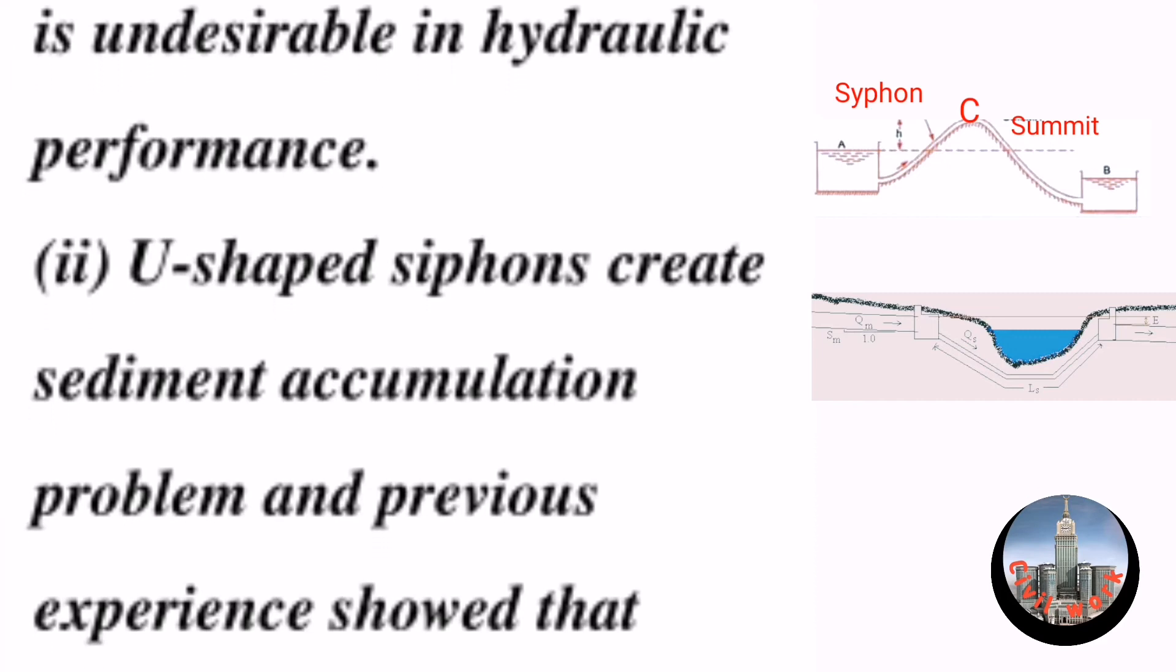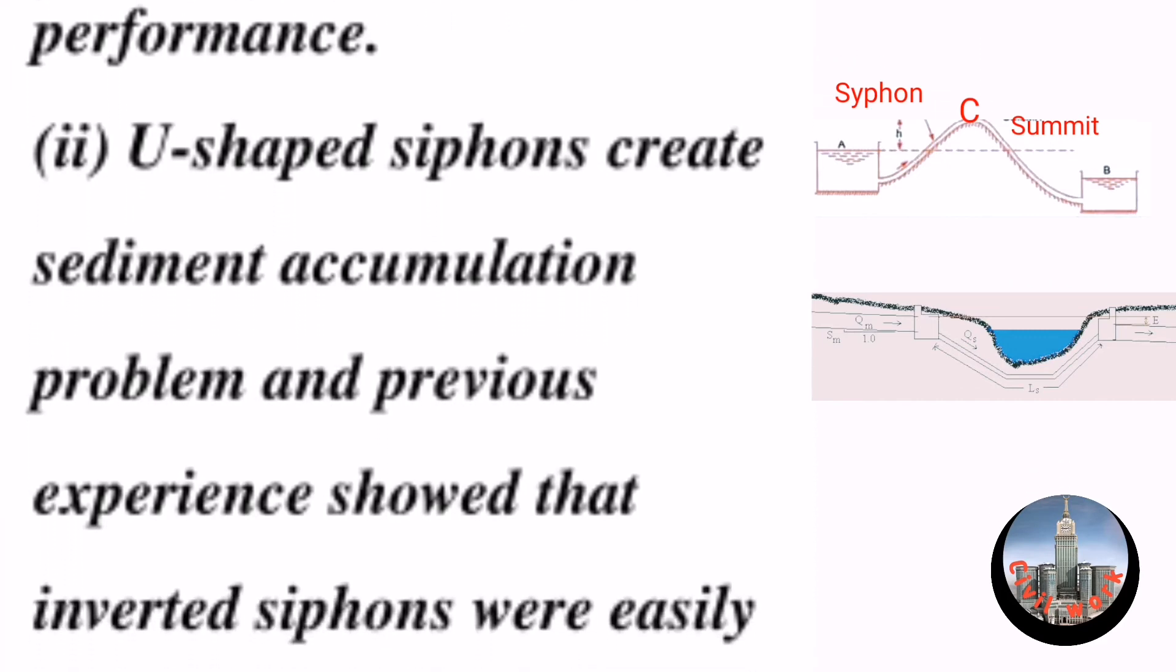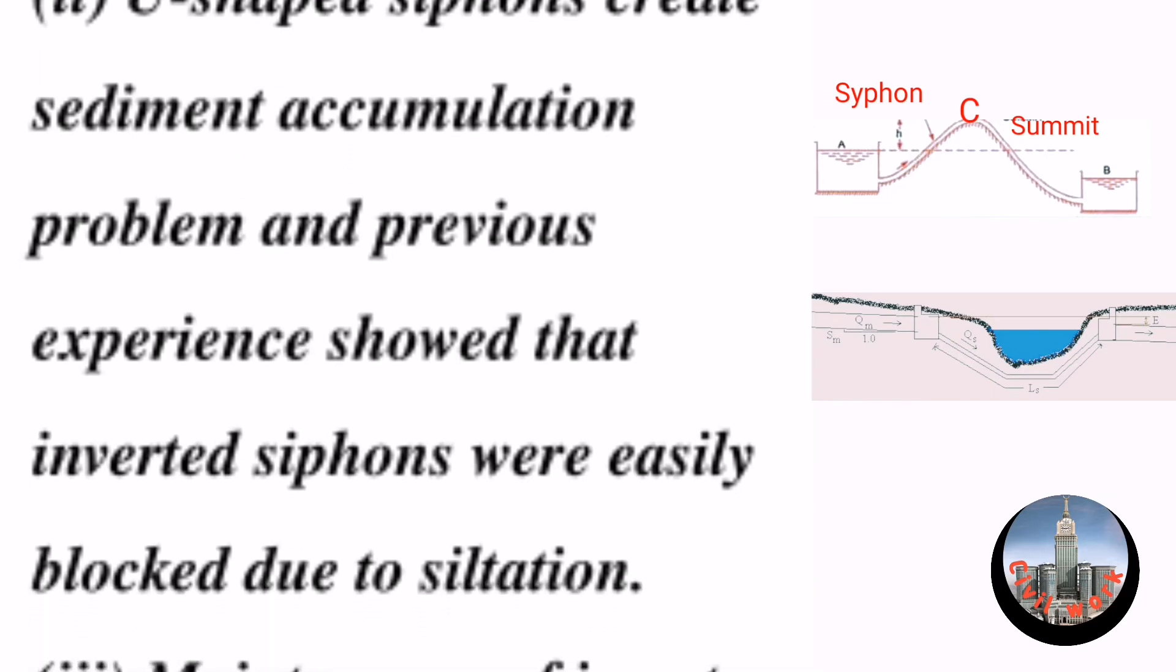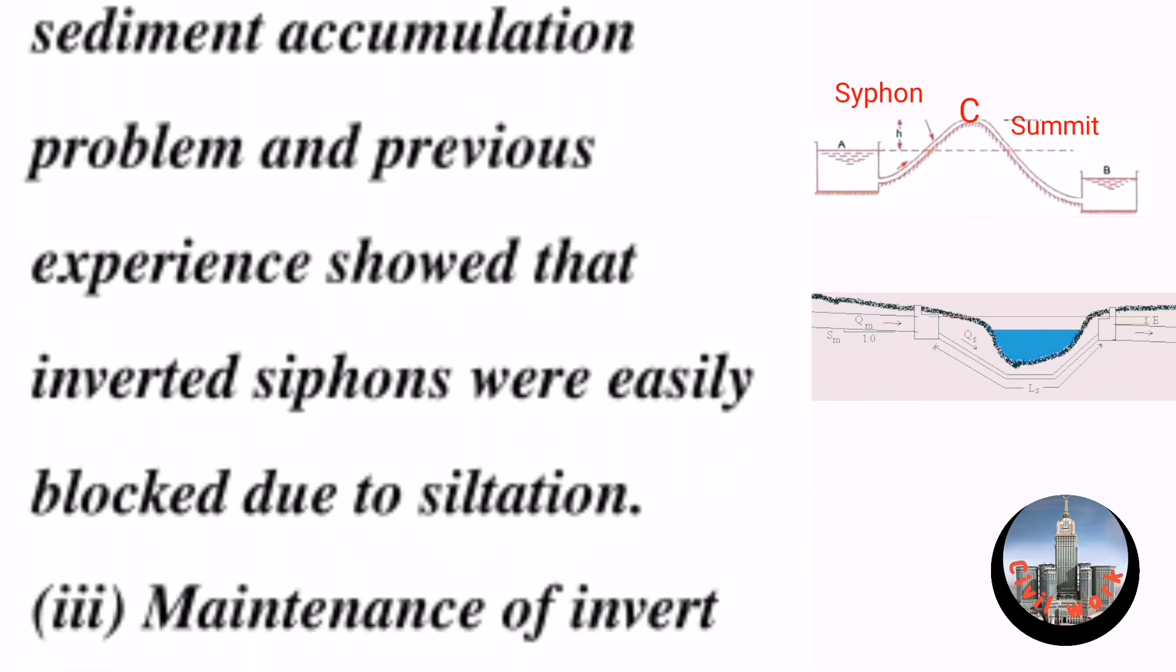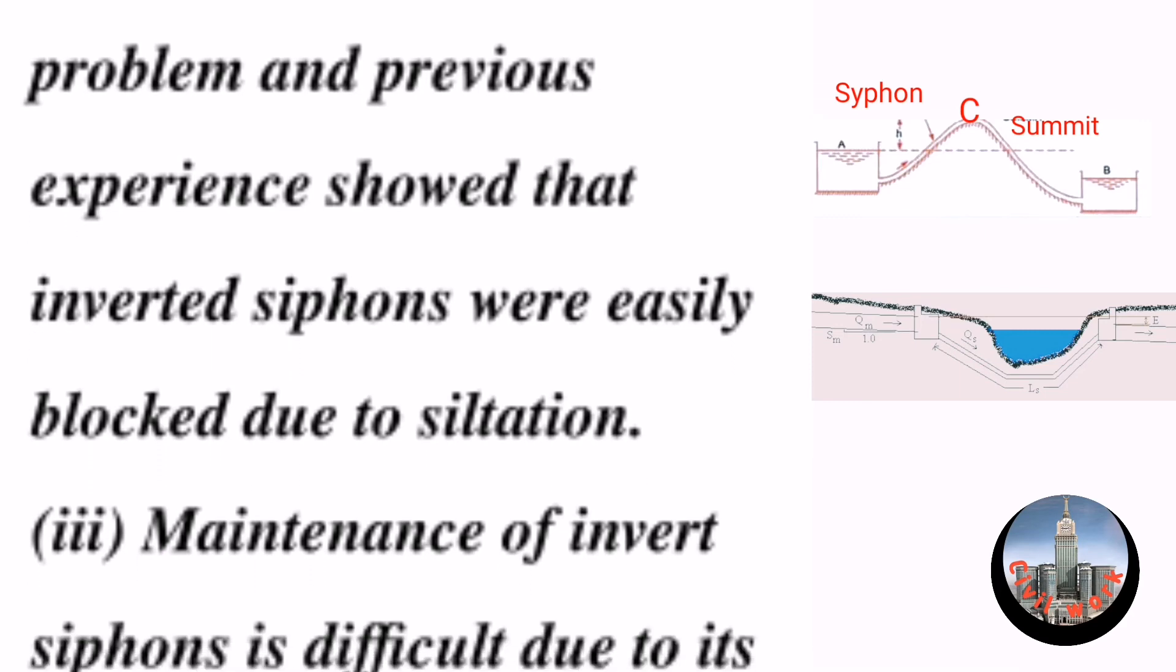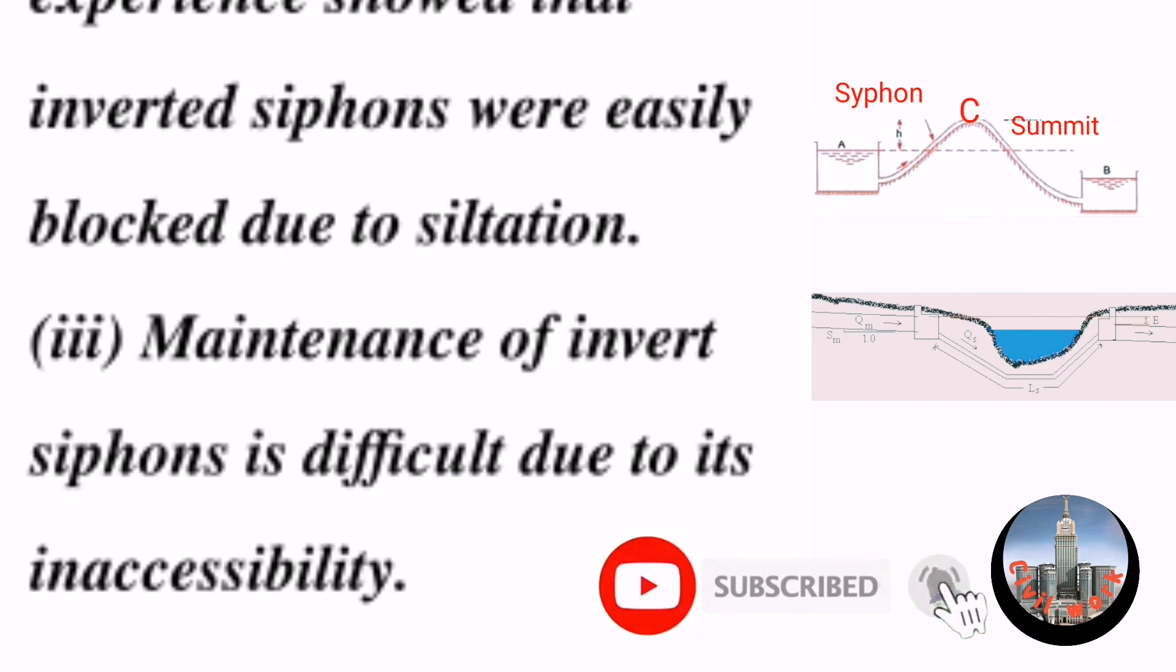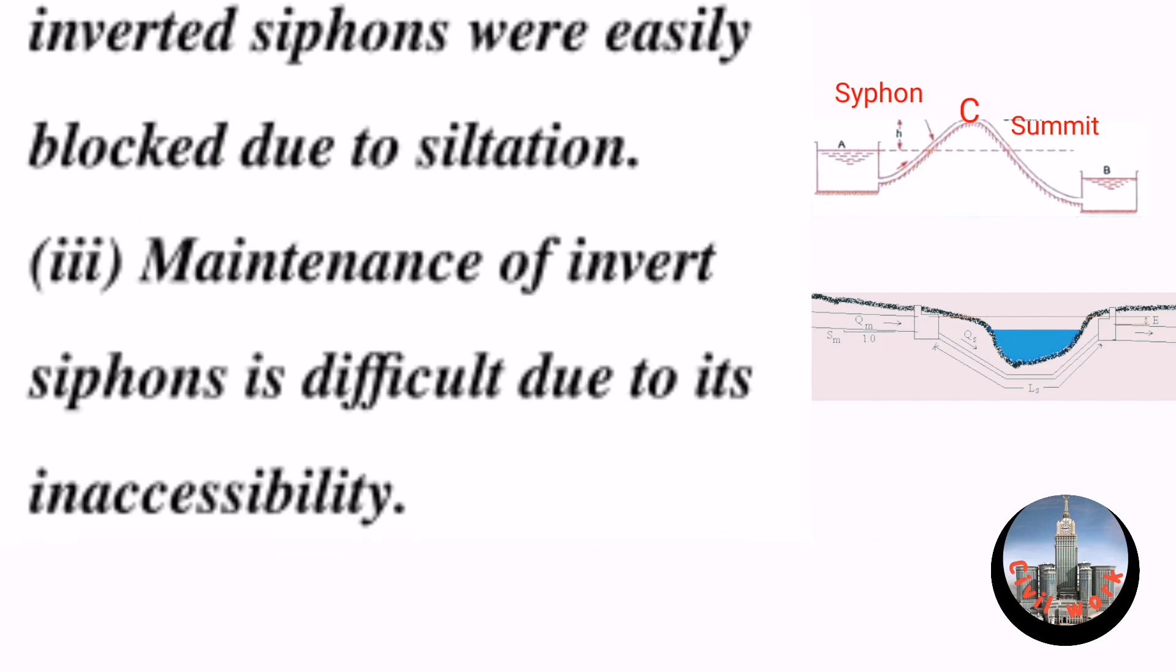(2) U-shaped siphons create sediment accumulation problems, and previous experience showed that inverted siphons were easily blocked due to siltation. (3) Maintenance of inverted siphons is difficult due to their inaccessibility. Thanks for watching.